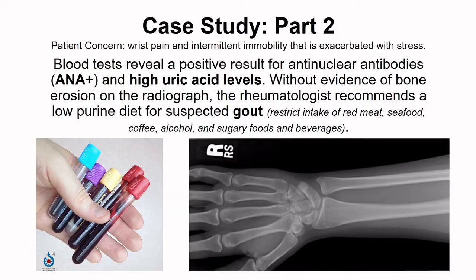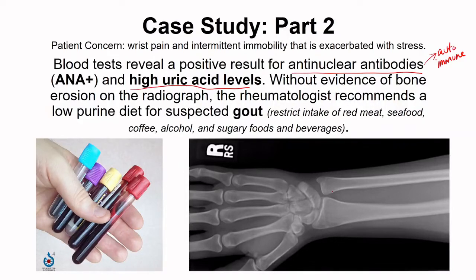So let's get back to our patient. The rheumatologist orders blood tests, and they come back positive for anti-nuclear antibodies, which is related to autoimmune disorders. They also have high uric acid levels. Looking at the radiograph, a trained healthcare provider can see no evidence of bone erosion, so autoimmune rheumatoid arthritis is taken off the table. Instead, the rheumatologist suspects gout based on the high uric acid levels, and recommends a low-purine diet, since purines break down into uric acid and this person may have a limited ability to clear it.